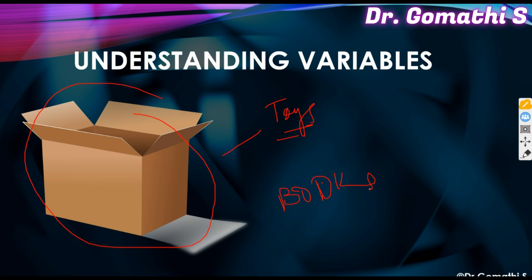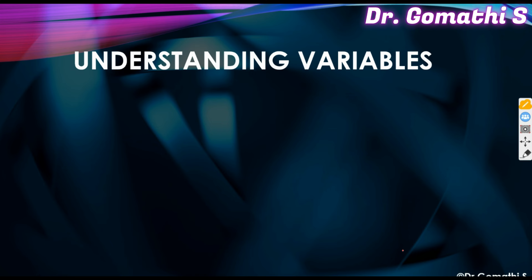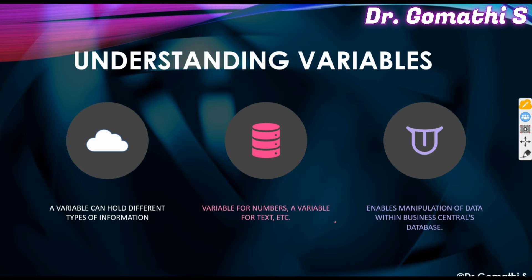In programming terms, you can have a variable to store employee age, a variable to store employee salary, and a variable to store employee name. That is what a variable is all about — it holds different types of information for future use. Variables may be for numbers, variables may be for text. This enables you to manipulate data within Business Central.